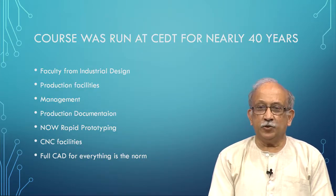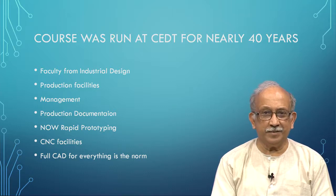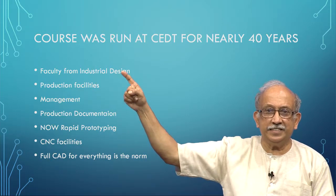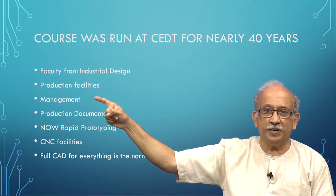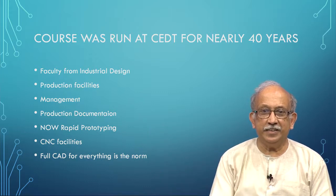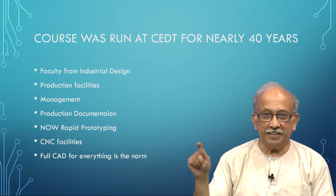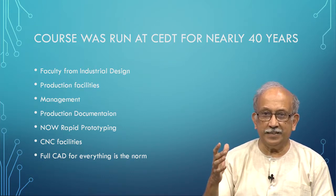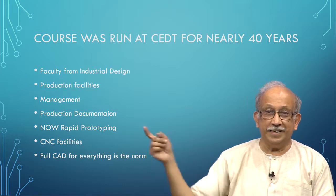This course evolved at the Center for Electronic Design over a long time, probably starting around 1975-76. Faculty involved in industrial design gave the outside shape, production facilities were built up, and management issues addressed how to handle various features. One thing commonly disliked is documentation — not user documentation, but recording how a decision was arrived at, so that if someone goes back to a design file they can understand what happened and why a decision was made.